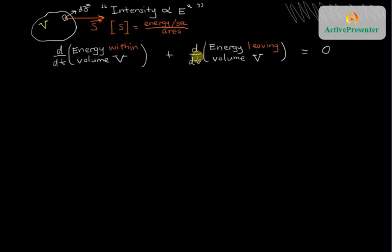This Poynting vector allows us very quickly to write an expression for the total energy per second, d by dt of energy, leaving volume V. We just integrate the Poynting vector over the entire surface. So this term becomes the integral over the surface of V of the Poynting vector dotted into d sigma.